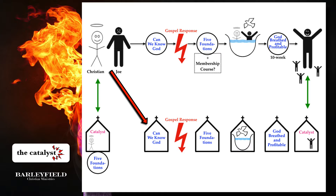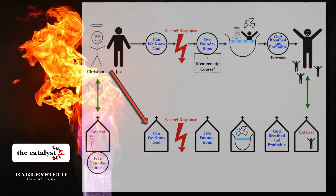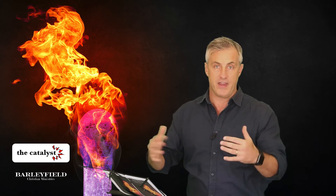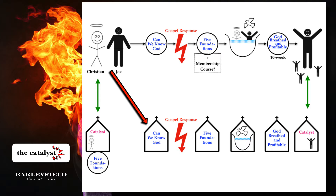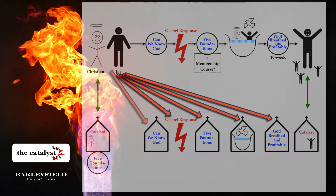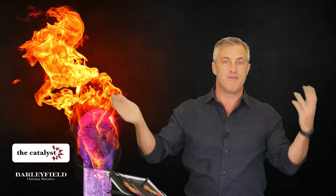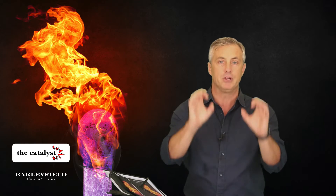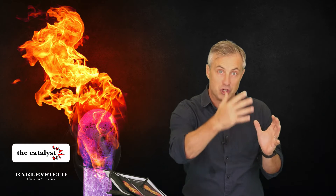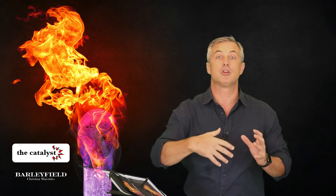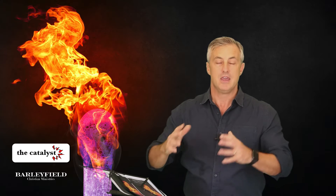Christian decides he's going to plug into that event and bring Joe with him. That has the added benefit of Joe coming to this little course, meeting other people, and beginning to see Christian community at work. The same can then be true of all the other events along that discipleship timeline — instead of Christian having to do all of this on his own with Joe, he can just take Joe along to church-based meetings and courses. There is a strategic discipleship journey that is clear in his mind and in the church's strategy, and now he's leading Joe along this pathway while the church supports him.